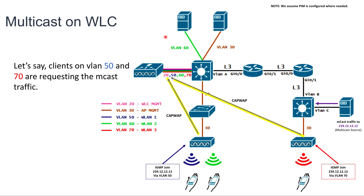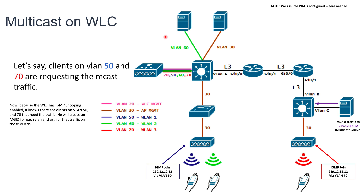The source of that packet will be the access point IP and the destination is the controller IP — it's a CAPWAP packet encapsulating the original Multicast frame. Because the controller has IGMP snooping enabled, it now knows the clients on VLAN 50 and VLAN 70 need traffic. So it will create an MGID — Multicast Group ID — for each of those combinations, and will send an IGMP membership report on those VLANs so it starts receiving the traffic.